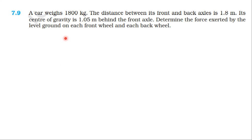From NCERT textbook, from the topic System of Particles and Rotation Motion, learn the exercise 7.9. A car weighs 1800 kg. The distance between its front and back axles is 1.8 meter. Its center of gravity is 1.05 meter behind the front axle. Determine the force exerted by the level ground on the front wheel and back wheel.